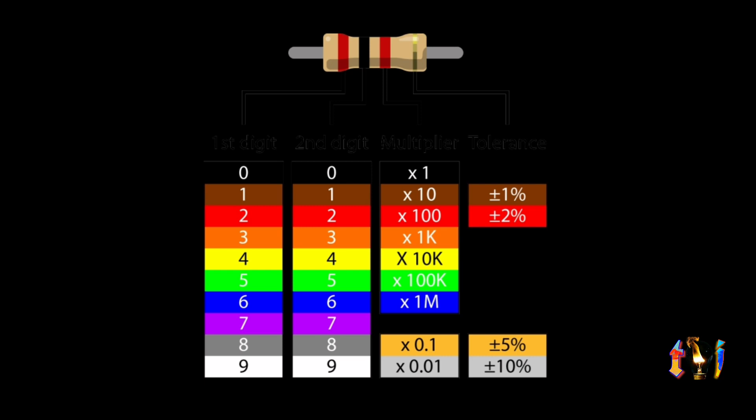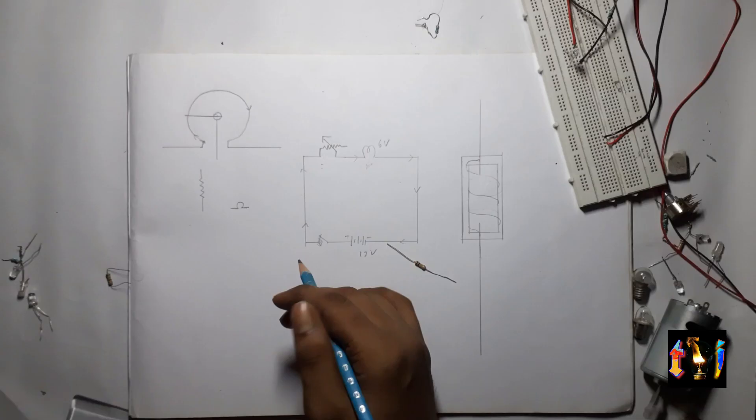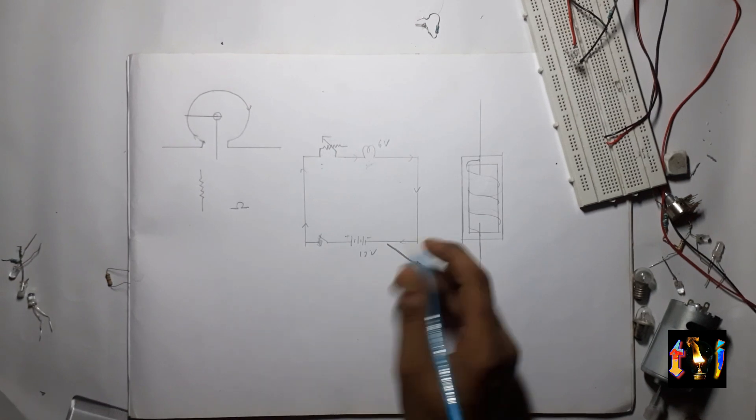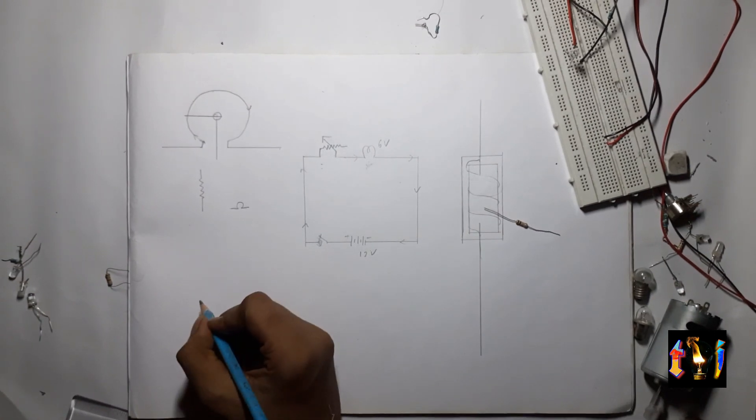So guys this is the table of the color coding of the resistors. So guys for remembering the table there is a shortcut.